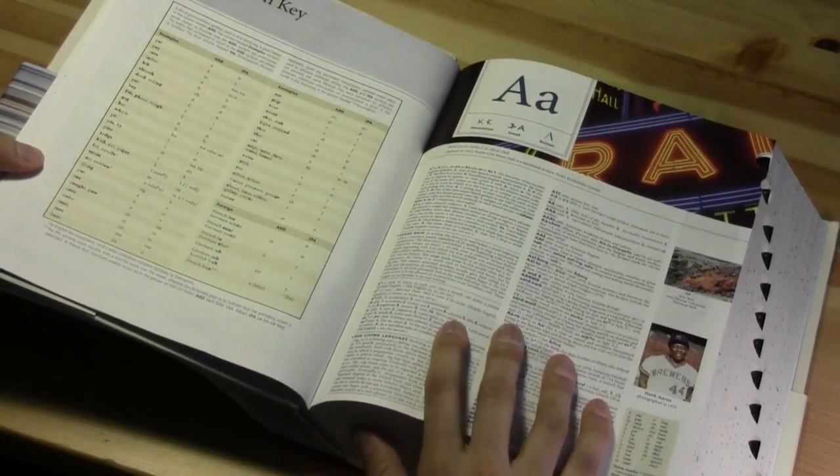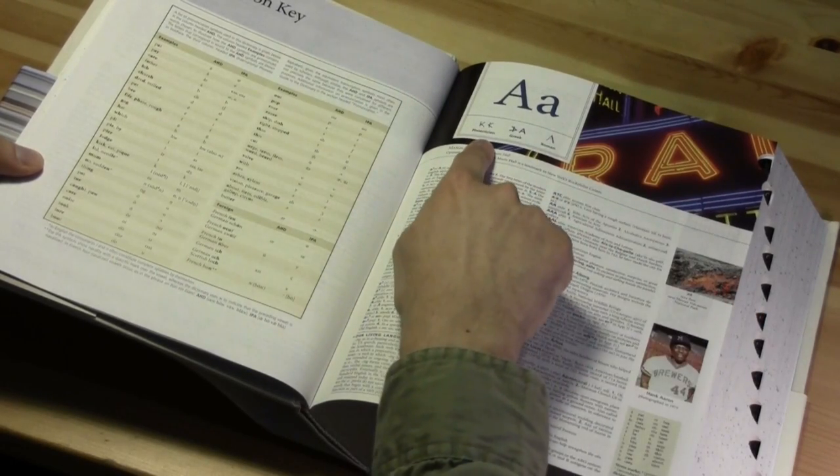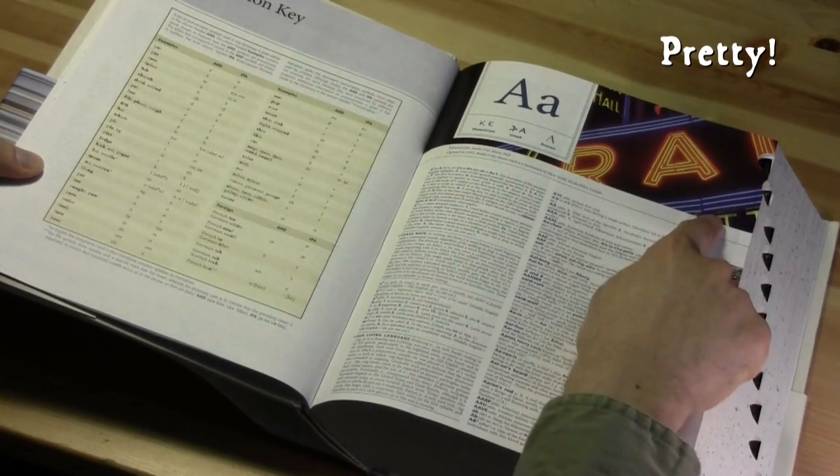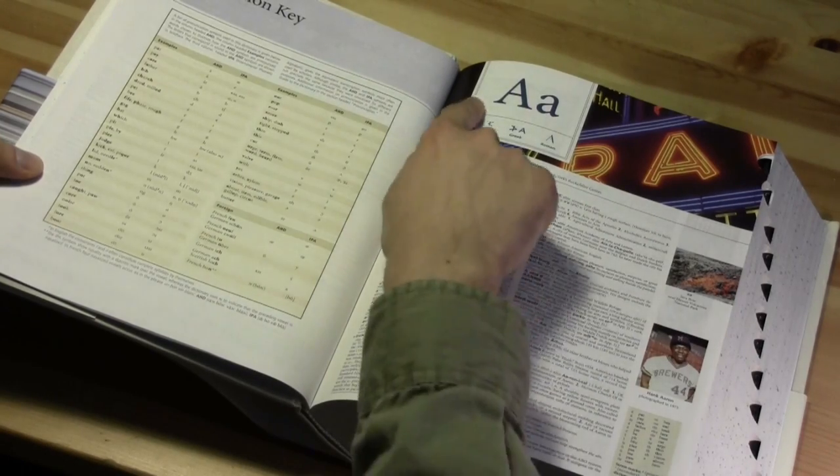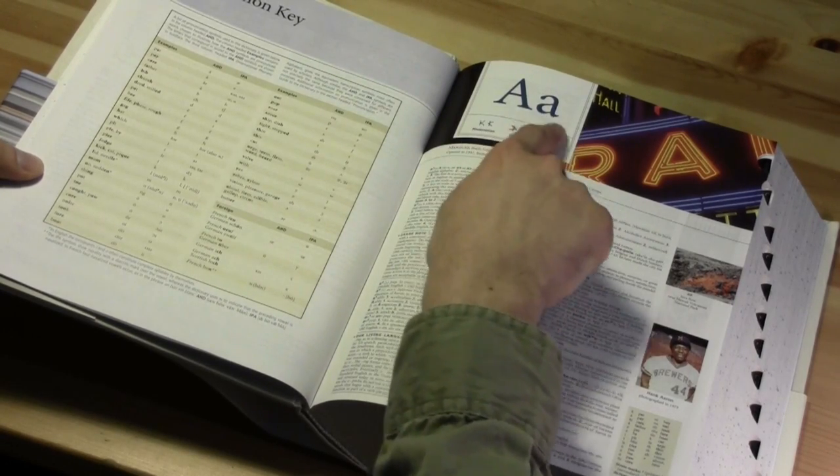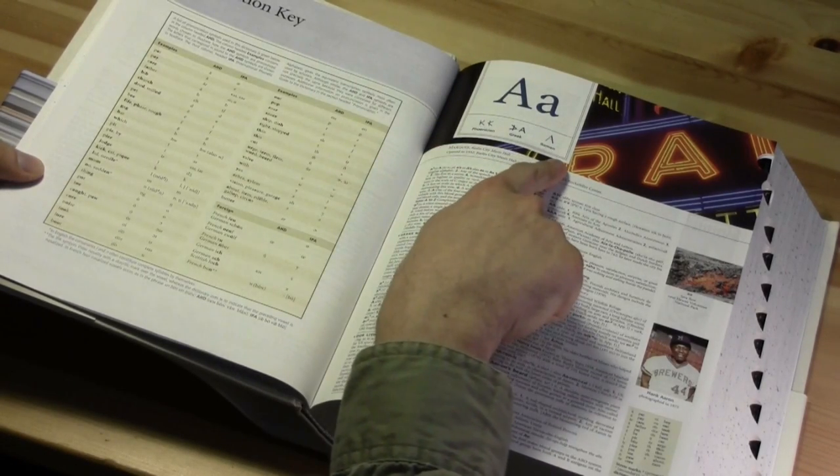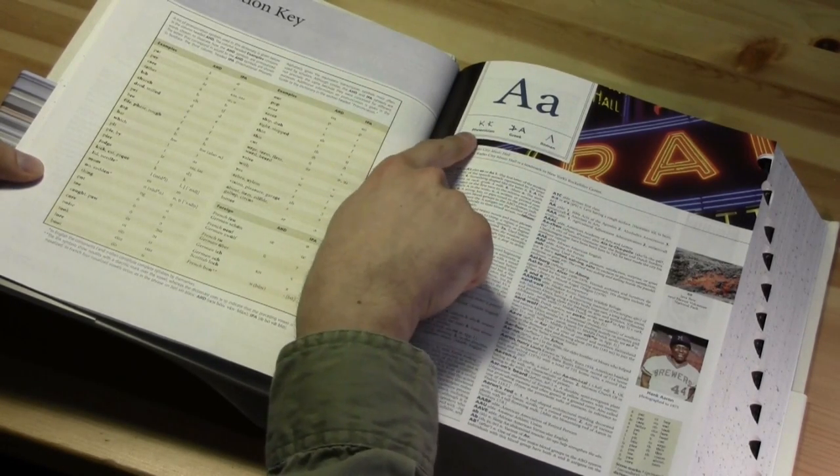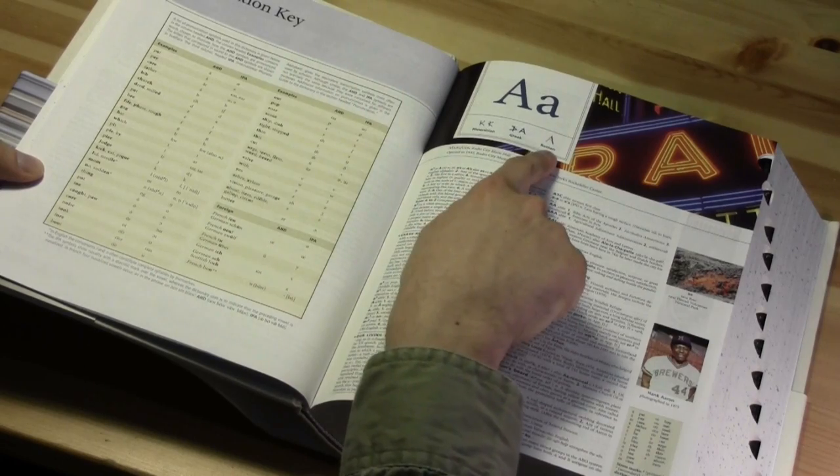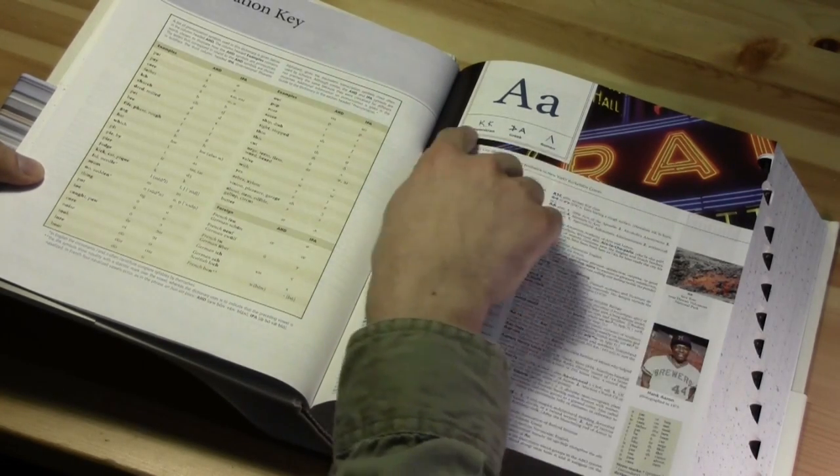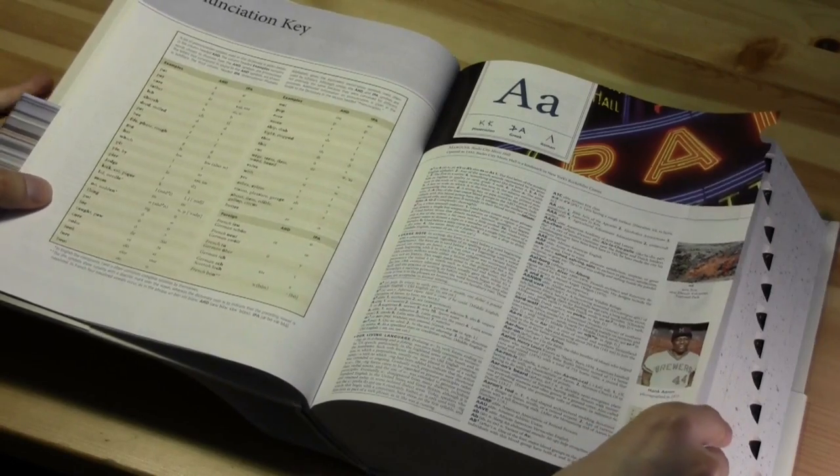One of the nice features is at the beginning of each letter, we have this nice graphic at the top, which gives us not only the modern typeface version of the letter, but the historical development of the letter themselves. So Phoenician, Greek, and then the Roman form. You can see how the letters themselves have evolved over time. That's a nice feature.